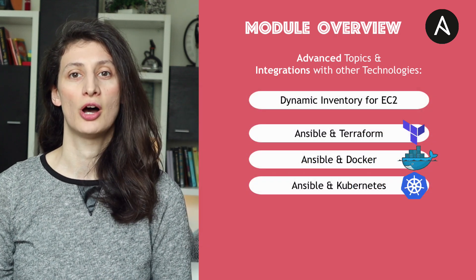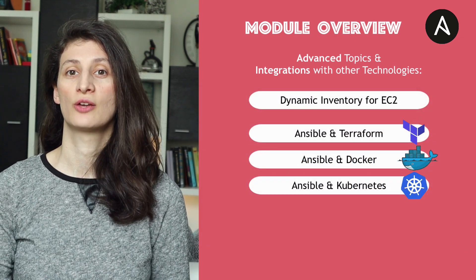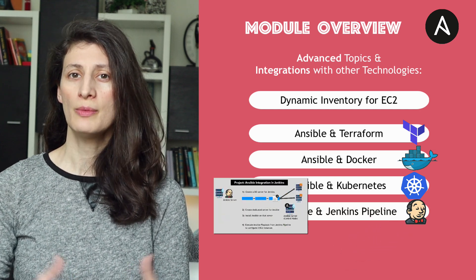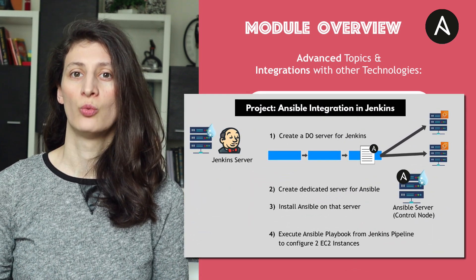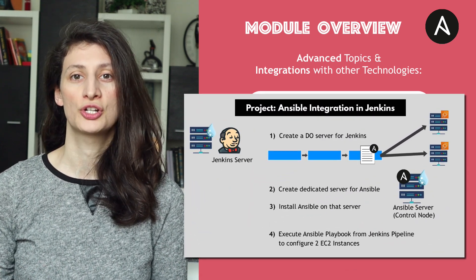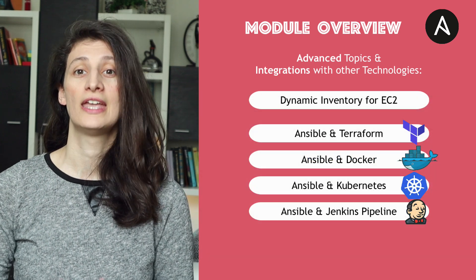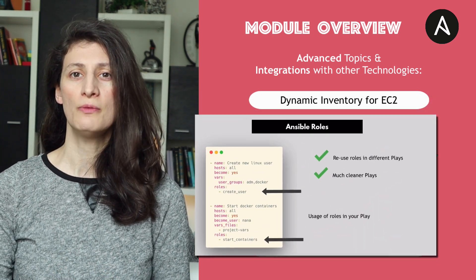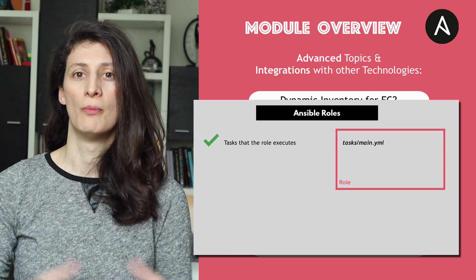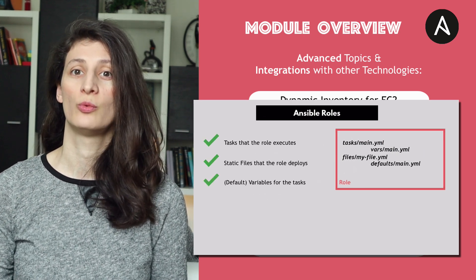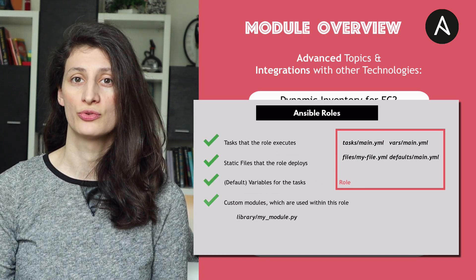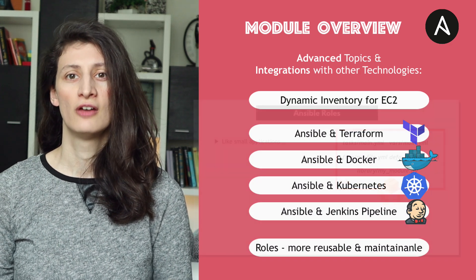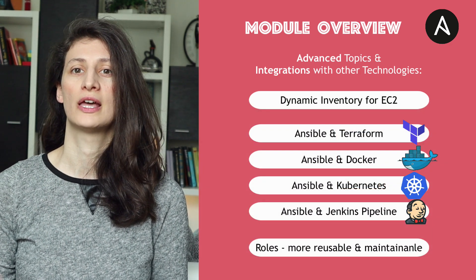In another demo project, we will integrate Ansible in the Jenkins CI/CD pipeline to automate application deployment with a production-grade setup. In the final demo project, you will learn how to make your Ansible content more reusable and modular with Ansible roles, so you know how to write more maintainable Ansible code for more complex projects.